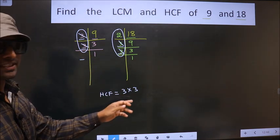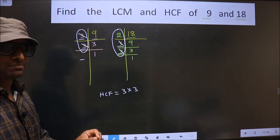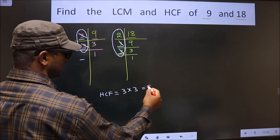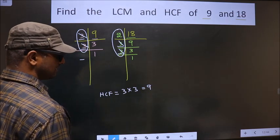Therefore, you multiply these numbers. Whatever number you get, that is your HCF. That is 3 times 3, we get 9. 9 is our HCF.